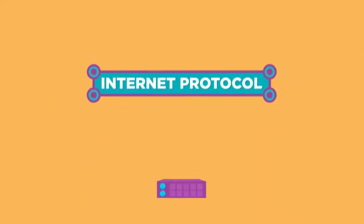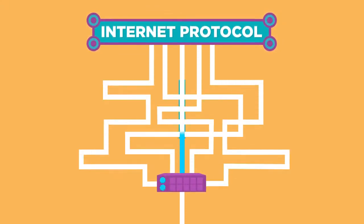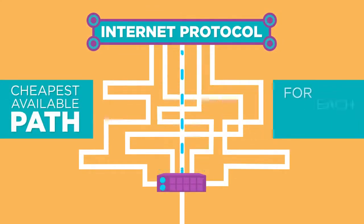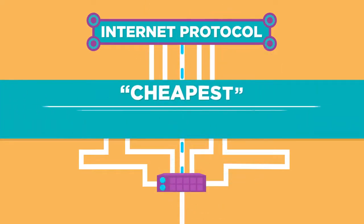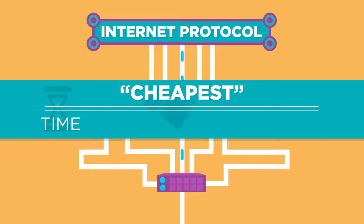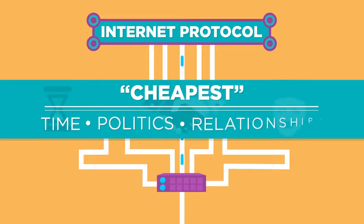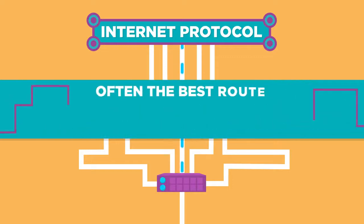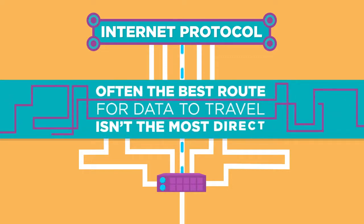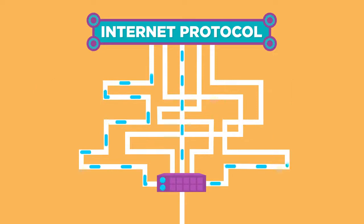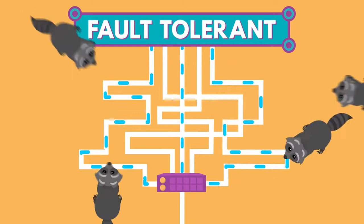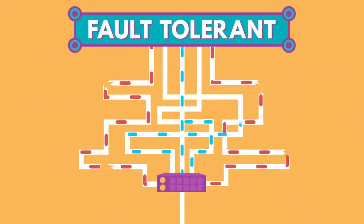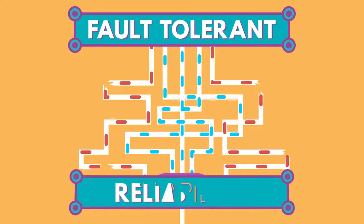As part of the internet protocol, every router keeps track of multiple paths for sending packets and it chooses the cheapest available path for each piece of data based on destination IP address for the packet. Cheapest in this case doesn't mean cost, but time and non-technical factors such as politics and relationships between companies. Often the best route for data to travel isn't necessarily the most direct. Having options for paths makes the network fault tolerant, which means the network can keep sending packets even if something goes horribly, horribly wrong. This is the basis for a key principle of the internet: reliability.